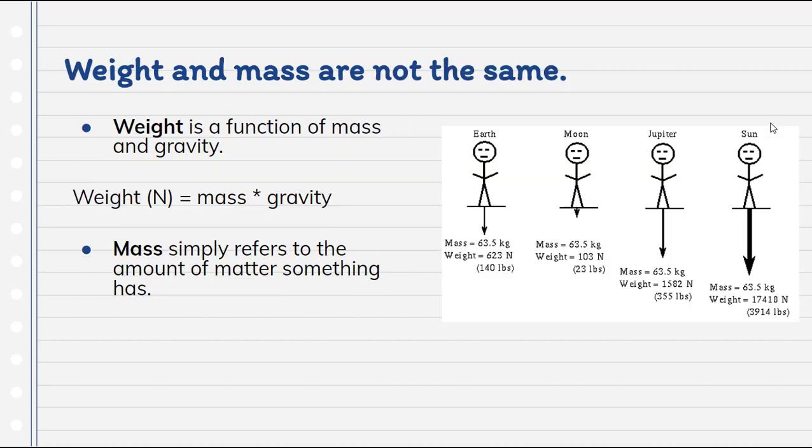So a couple of the things I want you to keep in mind is that weight and mass are actually not the same thing. They're very similar, but they are not. Weight is a function of mass and gravity. So weight in newtons equals mass times the acceleration due to gravity. Mass simply refers to the amount of matter something has.